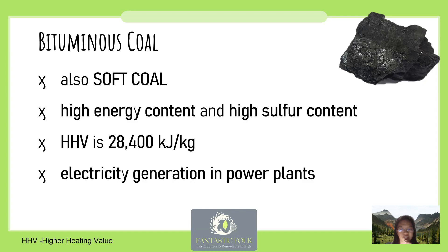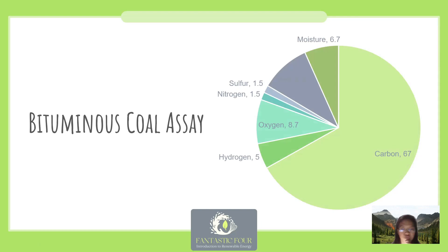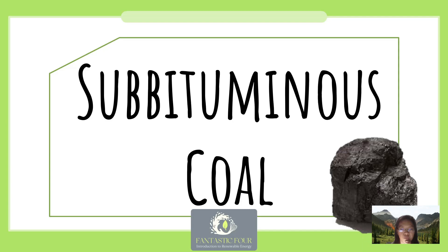The bituminous coal assay — its representative composition — is: carbon 67%, moisture 6.7%, sulfur 1.5%, nitrogen 1.5%, oxygen 8.7%, hydrogen 5%, and ash 9.8%. The next type is subbituminous coal, which has lower energy content and lower sulfur content compared to bituminous coal.